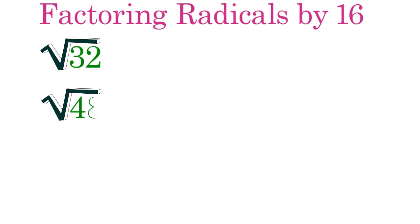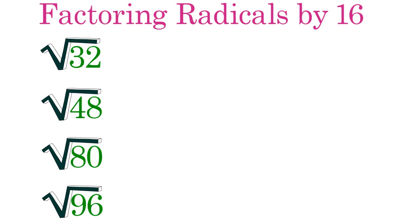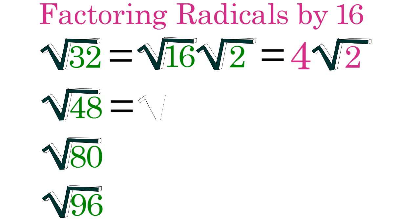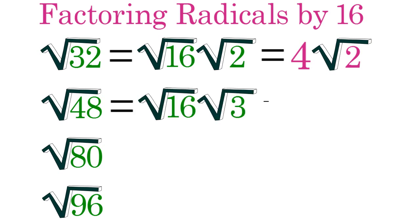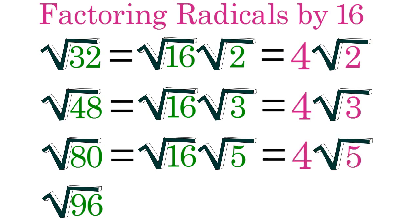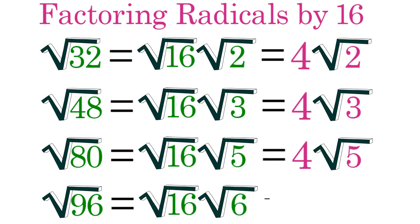You also discovered how to simplify radicals of numbers that are divisible by 16. Radical 32 equals radical 16 times radical 2, which equals 4 radical 2. Radical 48 equals radical 16 times radical 3, which equals 4 radical 3. Radical 80 equals radical 16 times radical 5, which equals 4 radical 5. And radical 96 equals radical 16 times radical 6, which equals 4 radical 6.